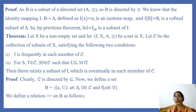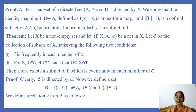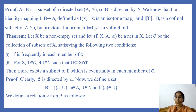Now we have a theorem: let X be a non-empty set and let (F, X, A, ≥) be a net in X. Let C be the collection of subsets of X satisfying the following two conditions: first, F is frequently in each member of C; and second, for S, T in C, there exists U in C such that U ⊆ S ∩ T. Then there exists a subnet of F which is eventually in each member of C.